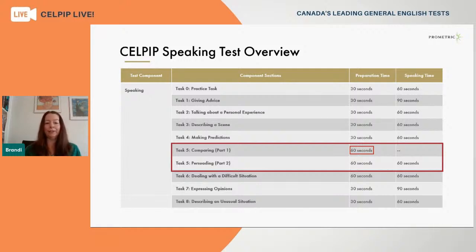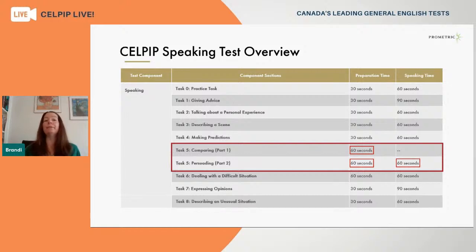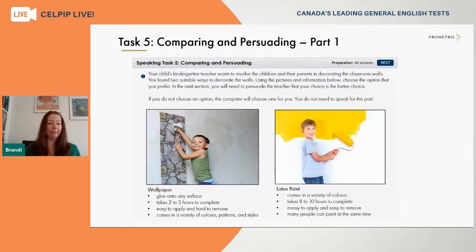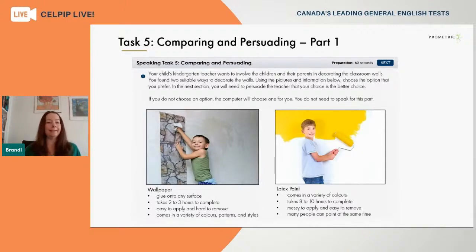When that minute is over, you automatically move on to part two of this task, where you're given a second full minute of preparation time. You can continue adding to your notes, and then when it comes time to speak, you'll be speaking for a full minute. This is a role play — you'll be speaking as if talking to another person, and your whole purpose is to persuade them to agree with a choice you've made. I'd like to start off by looking at a real past CELPIP test question — it's no longer live, but it's nice authentic practice.